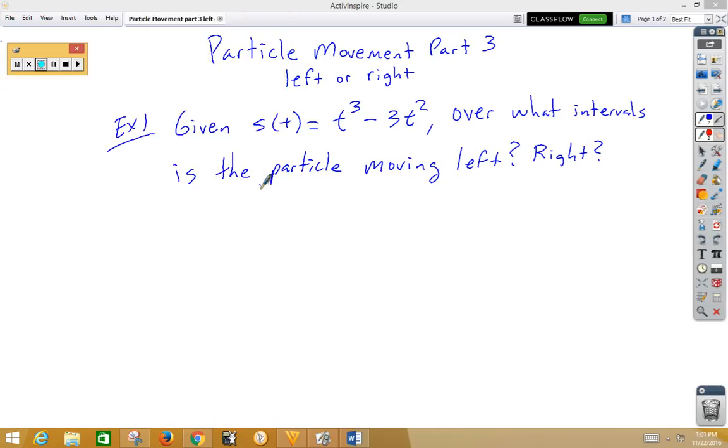In this video, we're going to discuss particle movement and how to tell whether the particle is moving left or right. In this example, the position function is t cubed minus 3t squared. Over what intervals is the particle moving left or right?